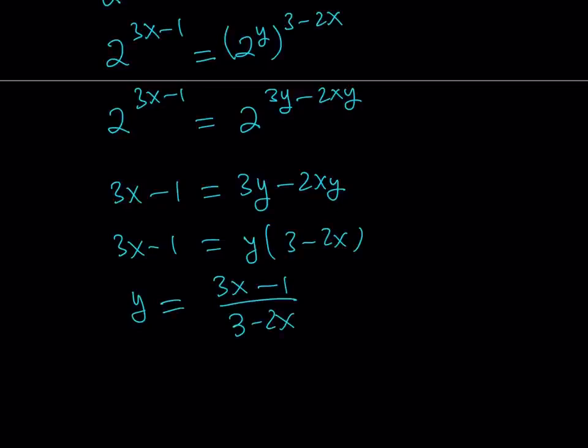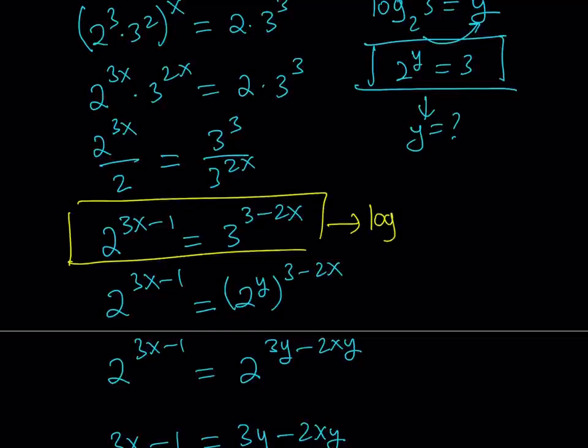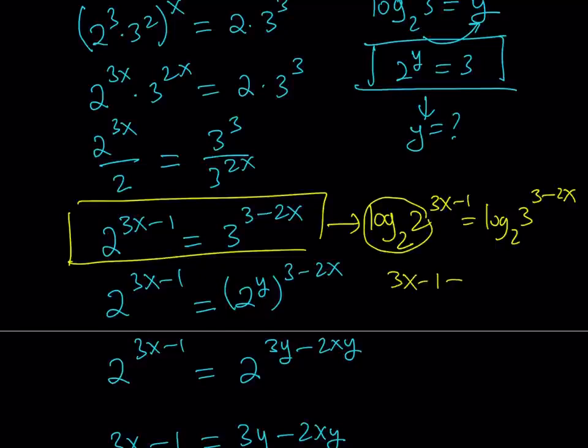And again you could use a slightly different approach here and take this expression and then log both sides and that would give you something like this. You can log both sides with base 2 because that's what we're looking for. And then from here you should get the answer because you're going to get a 1 from here. You're going to get the 3x minus 1. This is going to become a coefficient and it'll be multiplied by what we're looking for. And finally dividing by this you'll get the same answer.